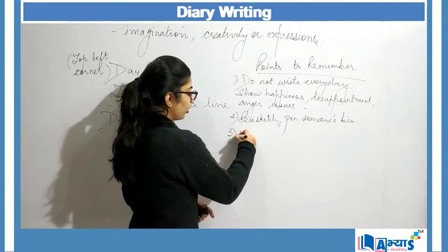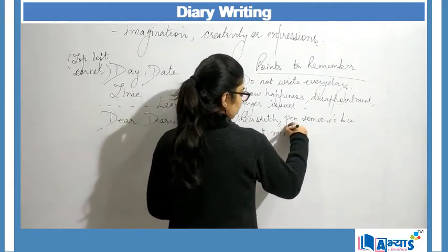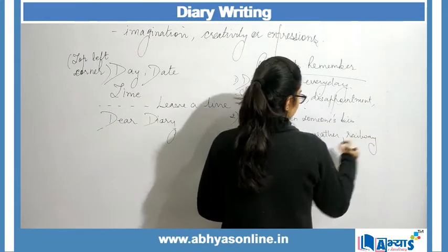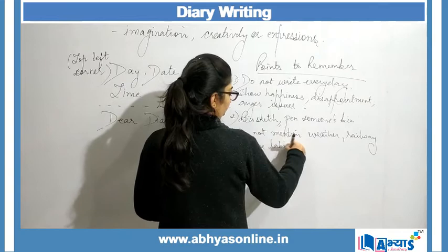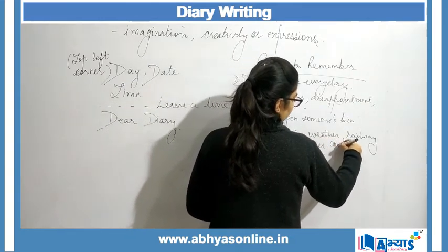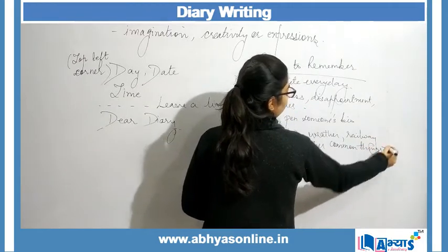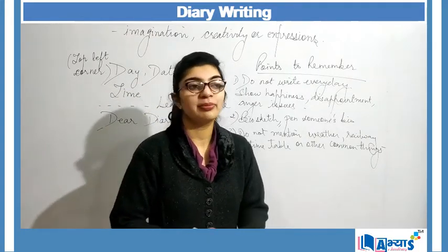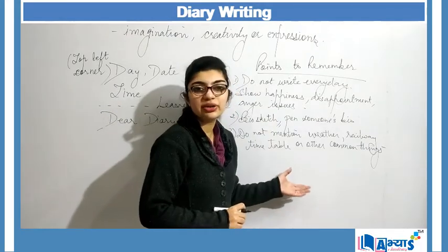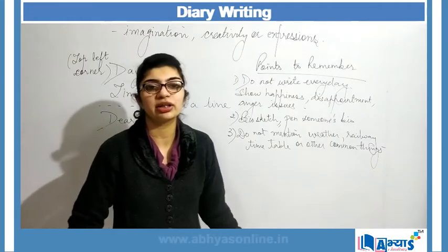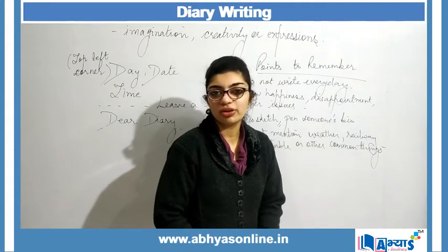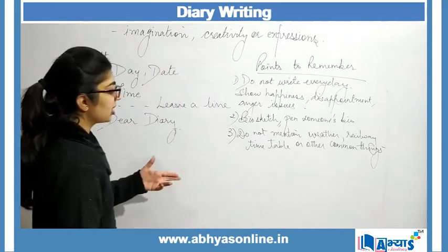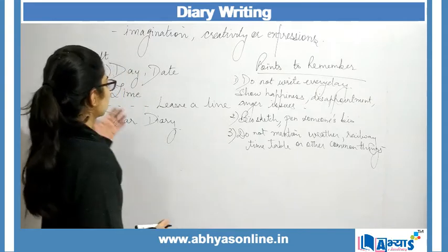Points not to include: do not mention weather, railway timetables, or other common things. Diary entry is meant for remembering something that was memorable — memories you want to hold onto. Common situations like 'today mom baked a cake' or 'today I went to tuition' are not required. It is only for something extraordinary happening in your life. These are the key points to remember along with the format.